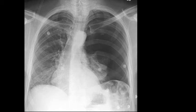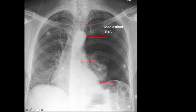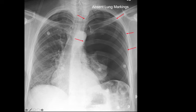In going through our approach, there are no lines and tubes here. The heart and mediastinum are clearly shifted towards the right. When we look at the lungs and compare both sides, you'll notice that the left side is extremely lucent. You'll also notice that there are absent lung markings in the majority of the left hemithorax and a collapsed left lung.